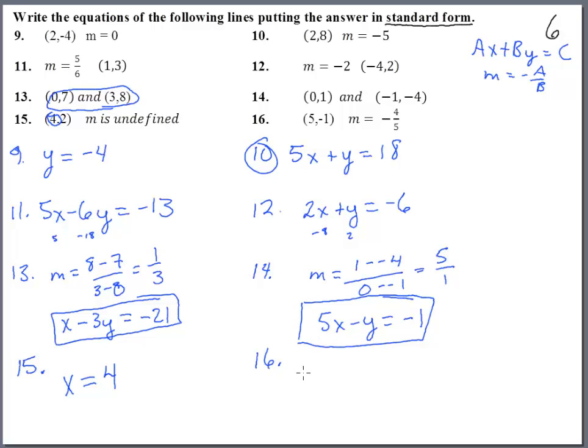Number sixteen, the slope is negative four-fifths, so that means 4x plus 5y equals. We stick in five - that's twenty - minus five is fifteen. And there we have it.